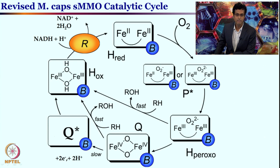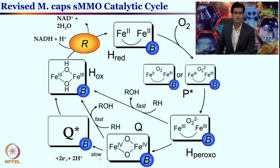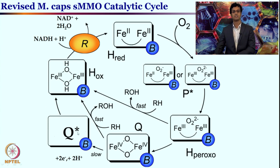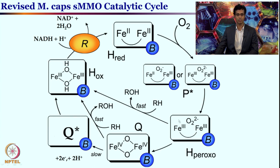Another possibility is that O–O bond cleavage of the peroxo gives the iron(IV) oxo species, which can then react with substrate methane to give an intermediate whose characteristics are not yet fully known. This subsequently forms the di-iron(III) dihydroxo-bridged intermediate. A new intermediate Q* is important, and it is also important to note that the H-peroxo intermediate can directly react with RH to give ROH without necessarily forming Q*.